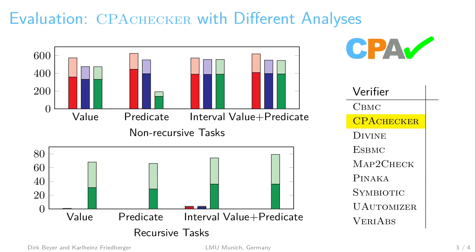To witness that our inter-procedural analysis is generic and configurable, we defined and evaluated the approach for three completely different abstract domains: explicit values, predicate abstraction, and an interval domain. Our approach is implemented in the open-source software verification framework CPA Checker.